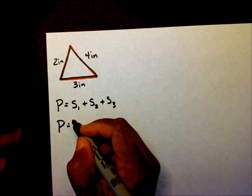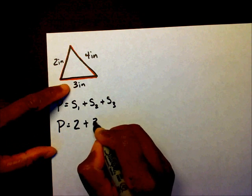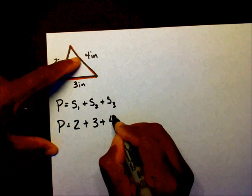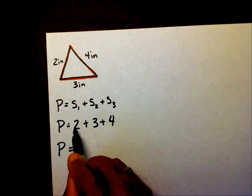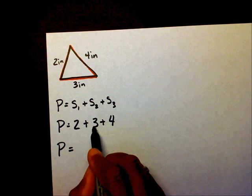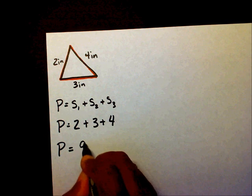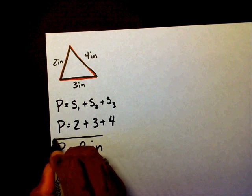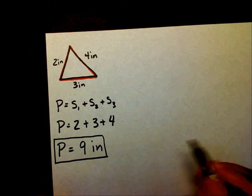P equals two plus three plus four. The perimeter is going to be two plus three is five, plus four is going to give me nine inches. That is the perimeter.